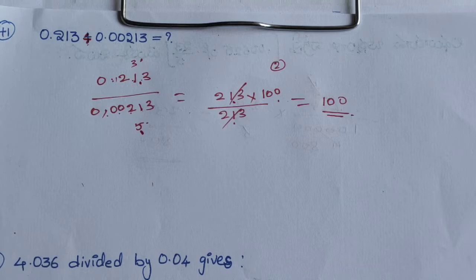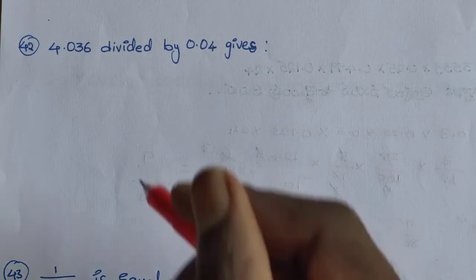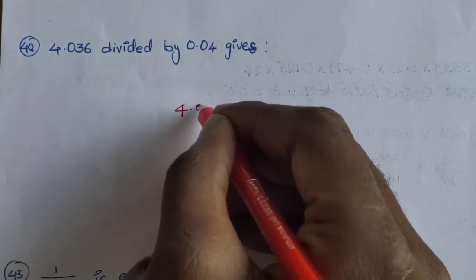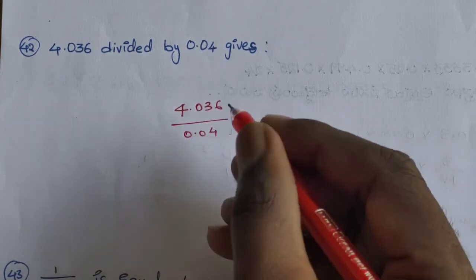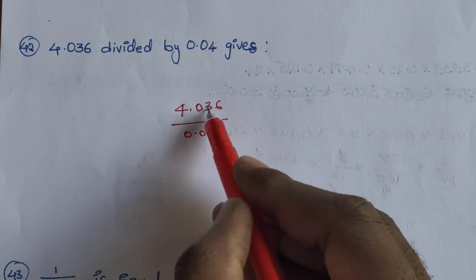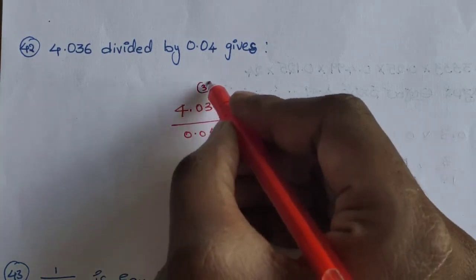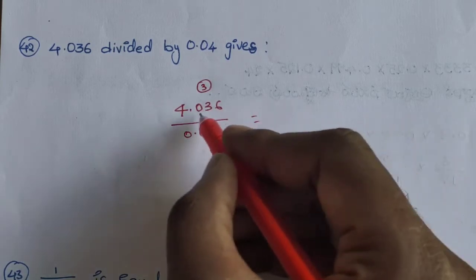Answer is 100. Next question, okay. Question 42: 4.036 divided by 0.04. So first, look at the right side — shift the decimal point: 1, 2, 3 places across.